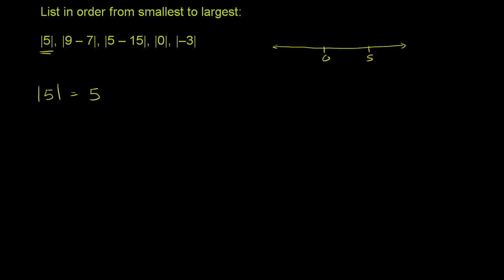The next quantity is the absolute value of 9 minus 7. This is the same thing as the absolute value of 2, since 9 minus 7 is 2. And 2 is just 2 units away from 0, so it's just 2. If you have a positive value in the absolute value sign, it just is itself — the absolute value of 2 is 2.